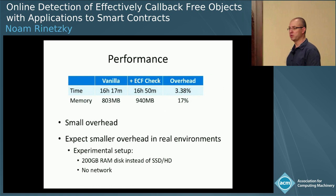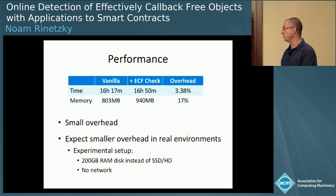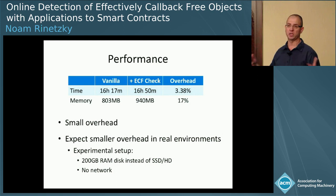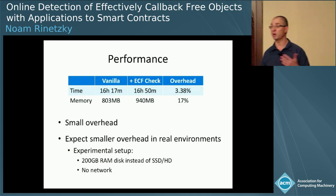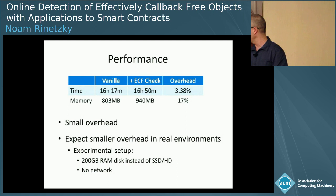The performance is pretty good: about 3.5% time overhead and 70% memory overhead. We expect the overhead to be smaller in real environments because our setup was non-realistic — we downloaded the entire blockchain locally, used no network, and used a RAM disk instead of standard hard drives or SSDs to make execution very fast.